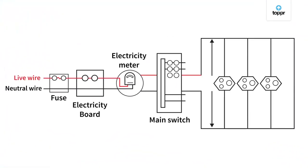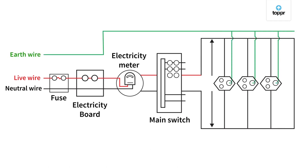As a safety measure to avoid electric shock when in contact with appliances with metallic bodies — like an electric press, toaster, or table fan — we use the earth wire, which has an insulation of green color. It is usually connected to a metal plate deep in the earth near the house. The metallic body is connected to the earth wire, which provides a low resistance path for the flow of current. It ensures that even after any leakage of current, the metallic body of the appliance keeps its potential equal to that of the earth, and the user will not get a severe electric shock.